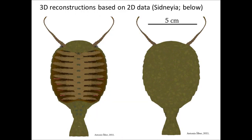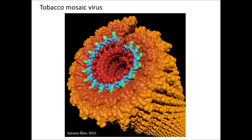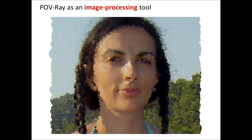You can also do 3D modeling based on 2D data. You can do complicated visualizations of a virus or complicated mathematical objects like spheres touching on the surface of another sphere with multiple reflections. You can also use POV-Ray as an image processing tool — I loaded an image into POV-Ray, defined a function based on the image, and sampled this function to reconstruct a three-dimensional representation, placing cylinders where I sampled the color function of the pixel. It's a really powerful tool for two-dimensional image processing.